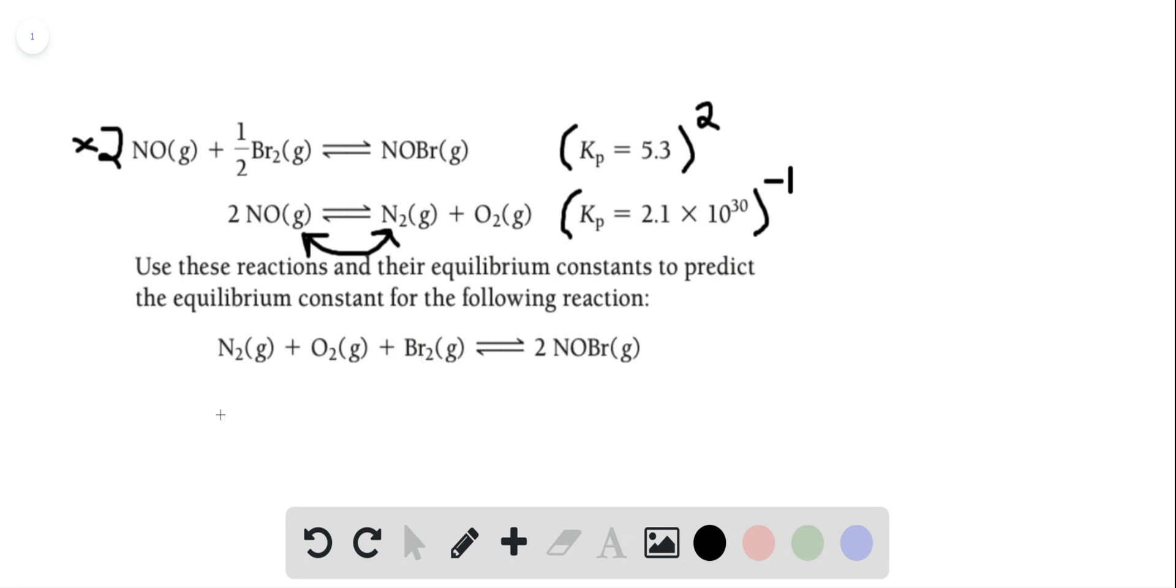To find the final equilibrium constant, we multiply each of these equilibrium constants together.